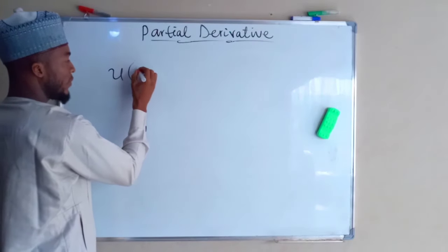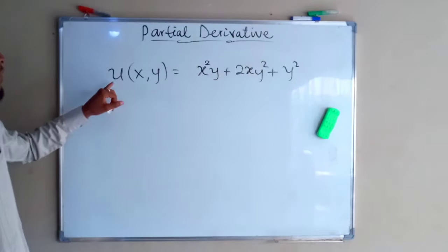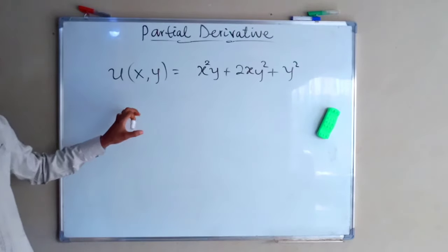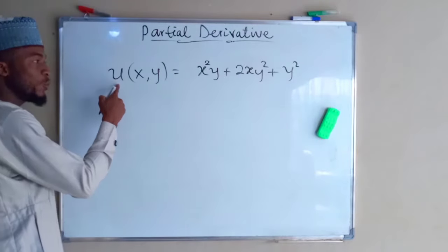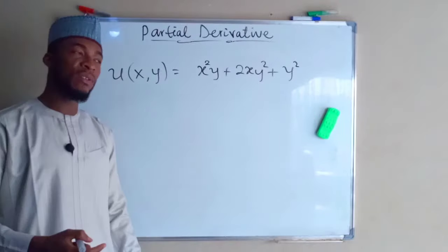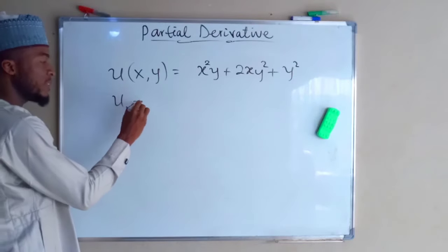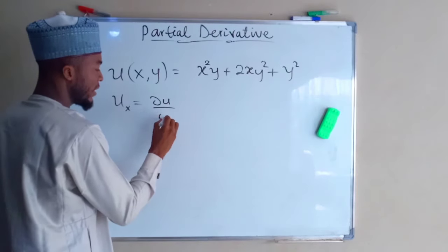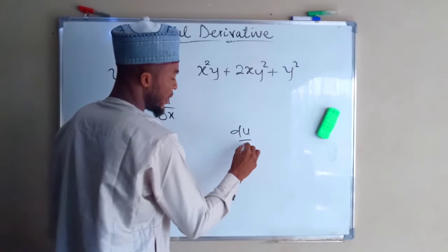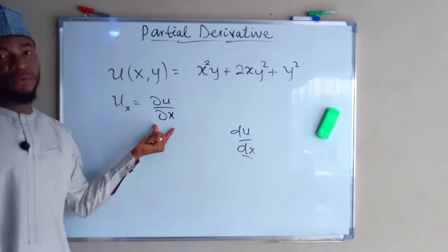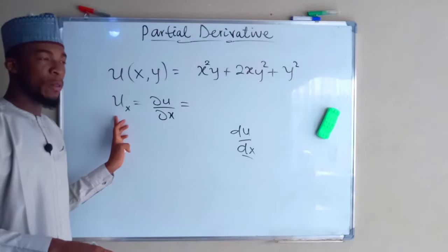Suppose u is a function of x and y. You can differentiate this function with respect to either y or x. To differentiate u with respect to x, you are going to treat y as constant. Therefore, we have u subscript x, which is the same thing as delta u over delta x. We are not going to use du over dx, because that is the total derivative, while delta u over delta x stands for the partial derivative. So we differentiate this function with respect to x, treating y as constant.